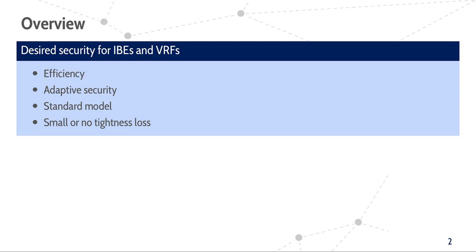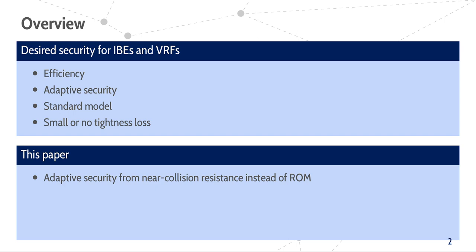When we construct identity-based encryption schemes and verifiable random functions, we want the constructions to be efficient and to have at least adaptive CPA security. Furthermore, we ideally want the constructions to be in the standard model and to have a small or no significant tightness loss. In this paper we show how we can use near-collision resistance, a natural assumption for hash functions, instead of the random oracle model in order to achieve adaptive security.